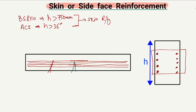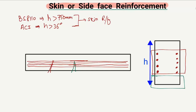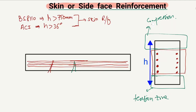The skin reinforcement is provided in the mid portion of the beam. Here is the tension zone of the beam, and this is the compression zone where concrete takes compression. Some reinforcements are provided to take the tension, but at locations where there is no tension reinforcement, we provide extra reinforcement known as skin or side face reinforcement.